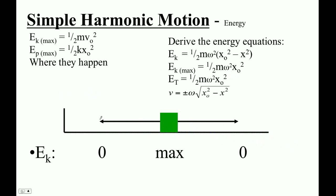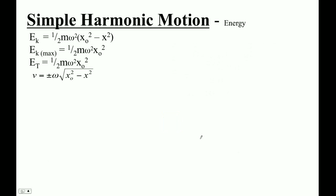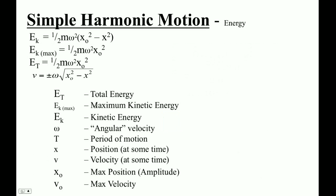When it oscillates back and forth, this is maximum kinetic energy in the middle where it's moving the fastest. At the edges it has no kinetic energy because it's not moving. Potential energy is max at the edges — the spring is distorted the most when it's at the edges. In the middle, it has no potential energy. So these guys are out of phase from each other. T is total energy, EK max is maximum kinetic energy, and EK is the kinetic energy at any given point.